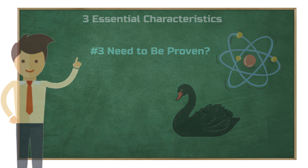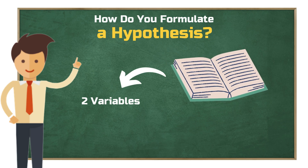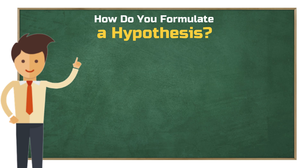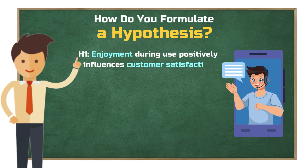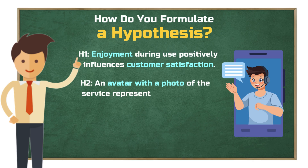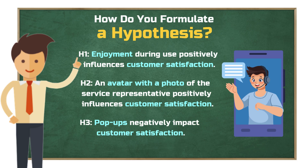Now let's get to the core question: how exactly do you formulate a precise hypothesis for your study? To formulate a research hypothesis, you need at least two variables. These variables typically come from existing literature. Imagine you want to design a customer service app — what relationships might be relevant? Here are three examples. H1: Enjoyment during use positively influences customer satisfaction. H2: An avatar with a photo of the service representative positively influences customer satisfaction. H3: Pop-ups negatively impact customer satisfaction.